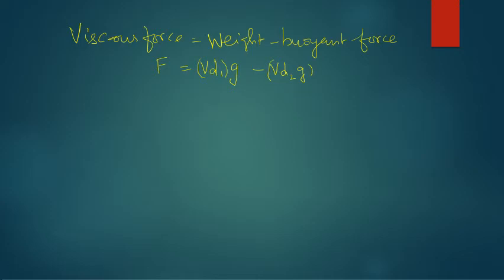Because equal amount of volume is displaced by the object, we can write this using the density ratio. We have 1 minus d2 by d1.